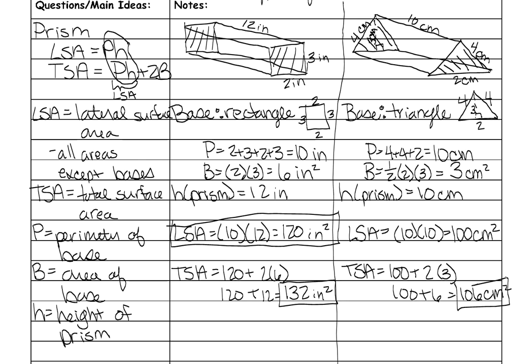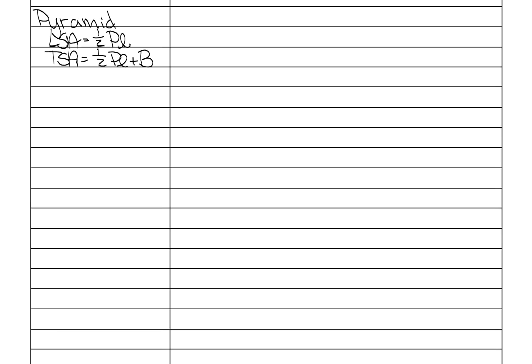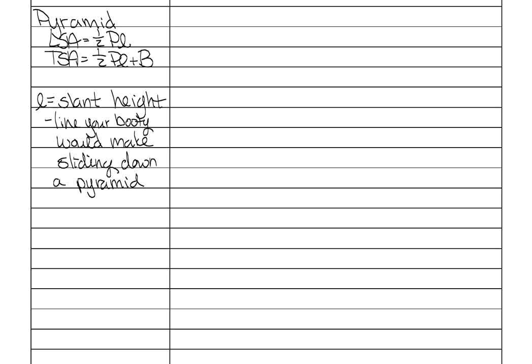Next we're going to cover pyramids. Here are the formulas for both the lateral and total surface area of a pyramid. They have big P and big B, but also a cursive L which stands for slant height. A lot of people confuse slant height and height of a pyramid. The regular height is as if you were dangling Mission Impossible-style from the very top straight down to the bottom. The slant height is the line your body would make if you slid down the side. Slant height is used for surface area on pyramids; height is used for volume.